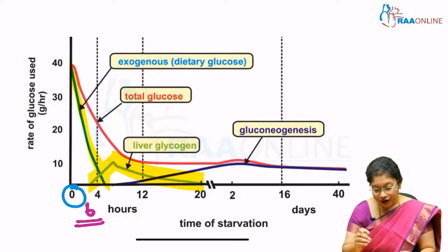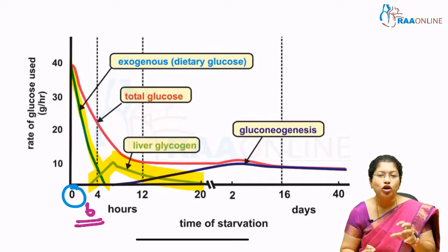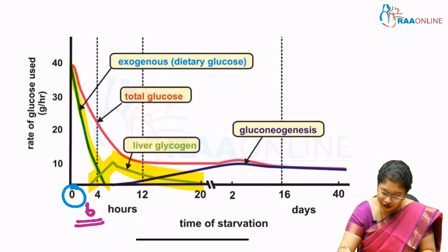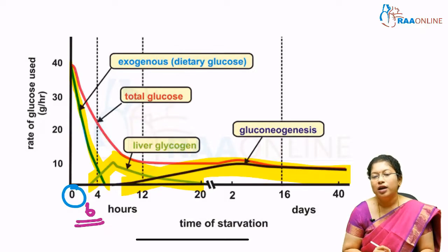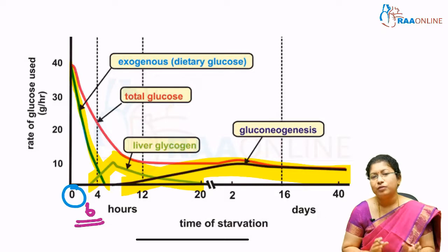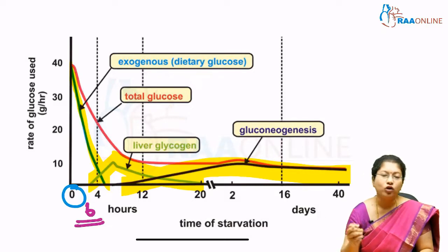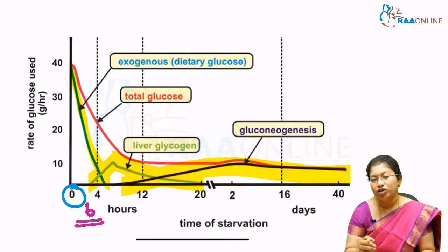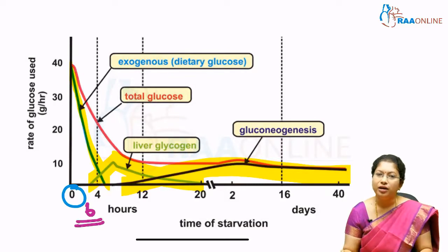Once the liver glycogen is also depleted, how do you get glucose? This is where gluconeogenesis comes into play. You can see a violet graph here. Gluconeogenesis occurs in the post-absorptive state — mainly eight hours post-absorptive. So if you don't eat even after eight to twelve hours, your gluconeogenesis starts, and that's how glucose is maintained in the body.